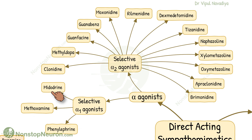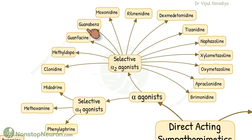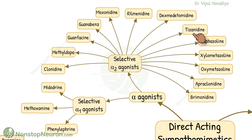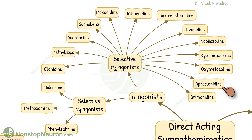Selective alpha-2-agonists are clonidine, methyldopa, guanfacine, guanabenz, moxonidine, rilmenidine, dexmedetomidine, tizanidine, naphazoline, xylometazoline, oxymetazoline, apraclonidine, and brimonidine.